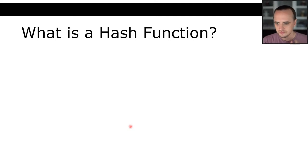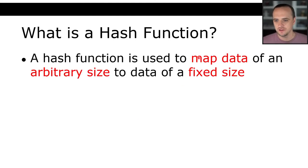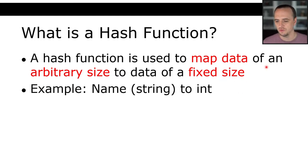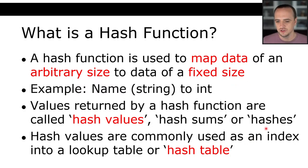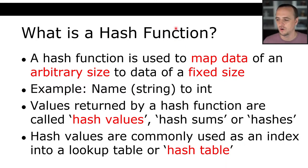A hash function is used to map or transform data of an arbitrary size into a fixed size. For example, take a string — whether it is a name, an address, or some other form of text — and turn that into an integer. Values returned by a hash function are called hash values, hash sums, or simply hashes. Hash values are commonly used as an index into a lookup table called a hash table.